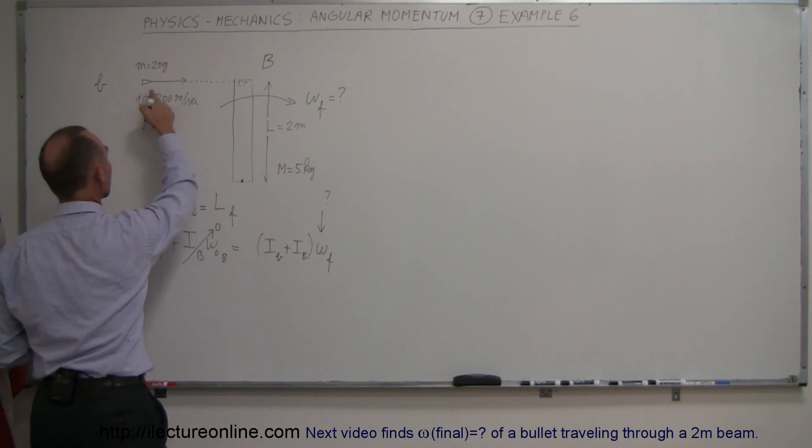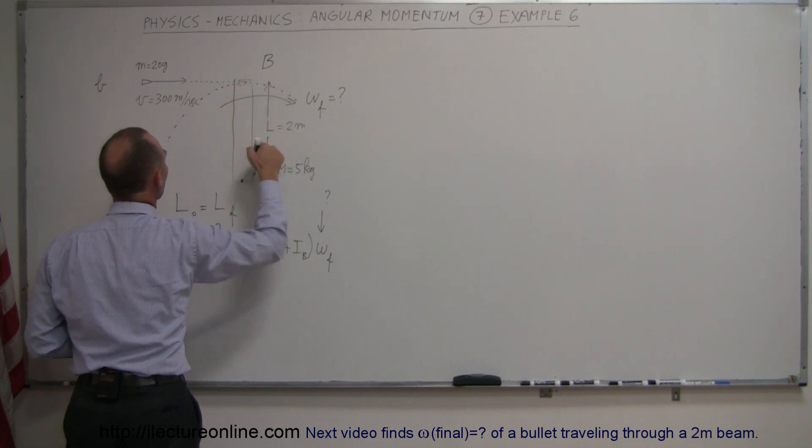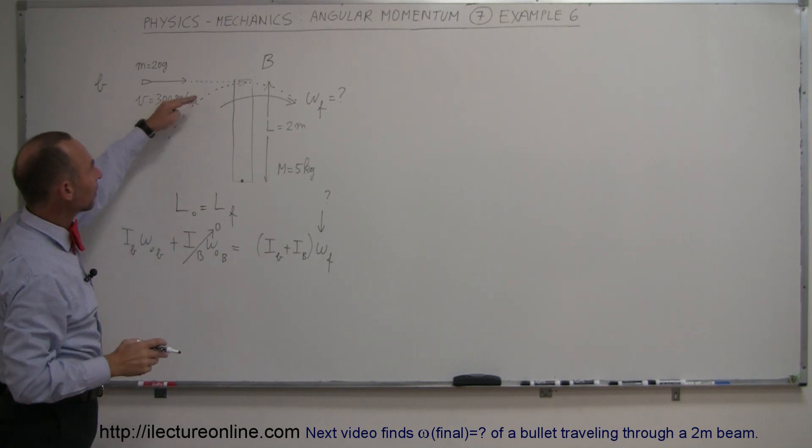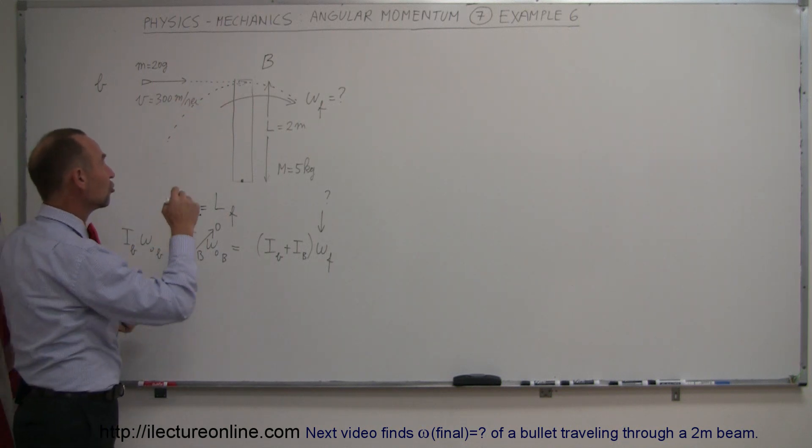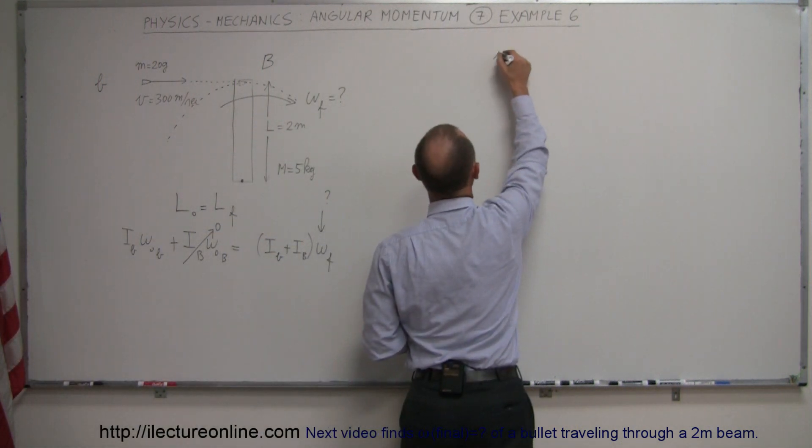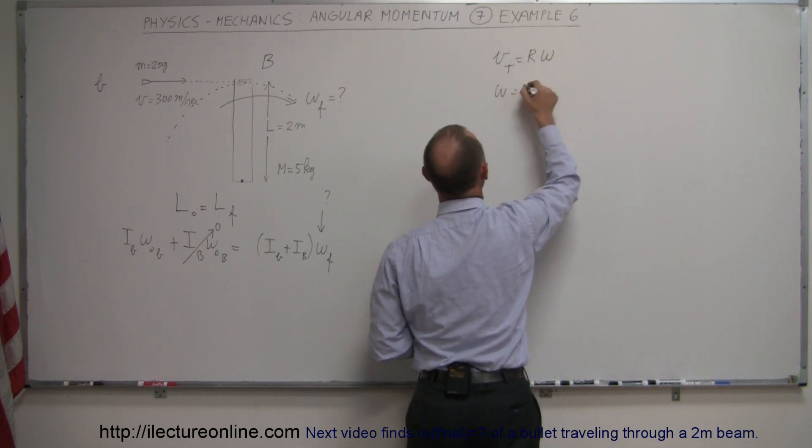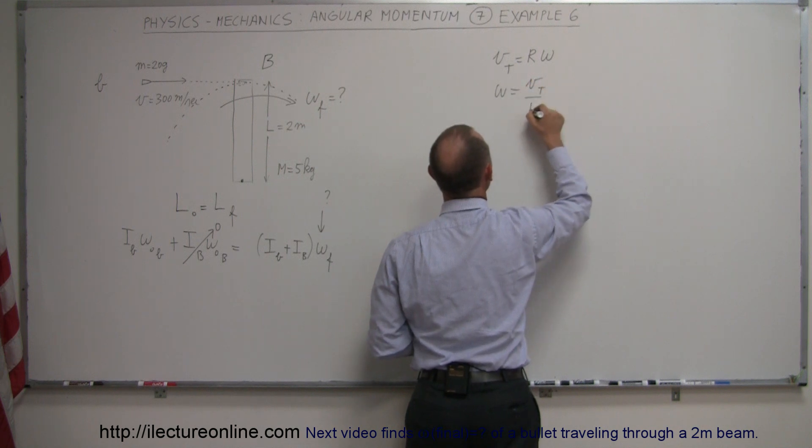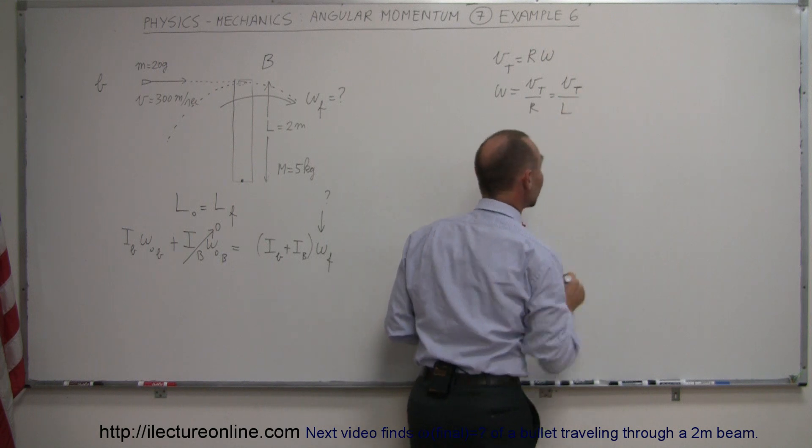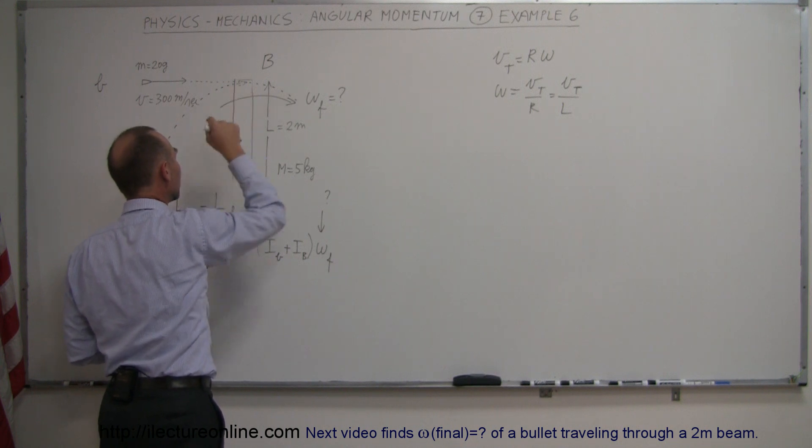Again, assuming that when the bullet reaches the beam it could be assumed to be traveling in a circular path of radius L, the length of the beam, the angular velocity can be found by taking the tangential velocity at that moment and converting it using that radius. So we know that the tangential velocity is equal to R times the angular velocity, or the angular velocity is equal to the tangential velocity divided by the radius. In this case it'd be the velocity of the bullet divided by the length of the beam because that would be the radius of the circular motion after the bullet hits the beam.